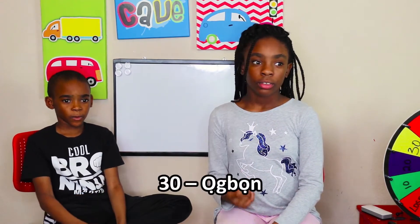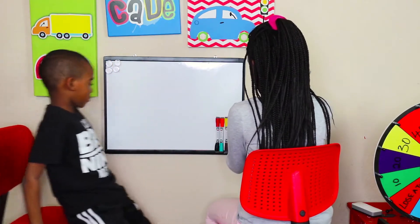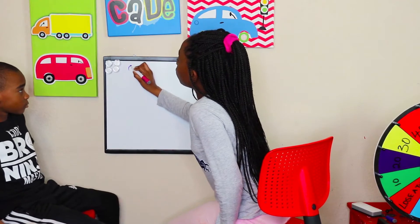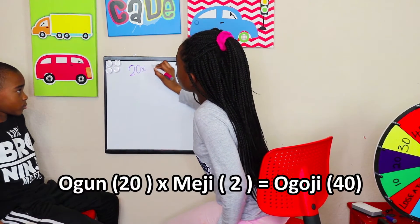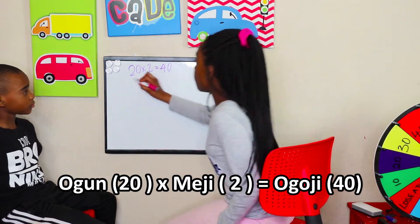Okay guys, now to show you what we learned yesterday. First things first, 10 is Mewa. What's 20? Ogun — that's a special one. If you can't remember Ogun, you can't remember any other one. So what's 30? Ogbon. Yeah, that's it. So 40 — everyone makes mistakes sometimes — 40 is Ogoji.